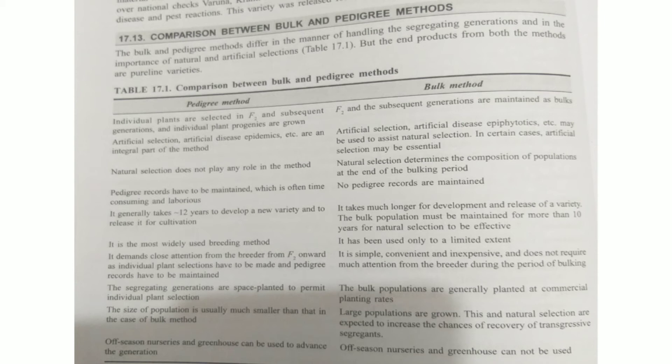Over 1, 2, 3, 4, up to 7 years we have given time for nature to act. We select the variety, select the crop, harvest it, and harvest the bulk — so natural selection is very important in the bulk method.